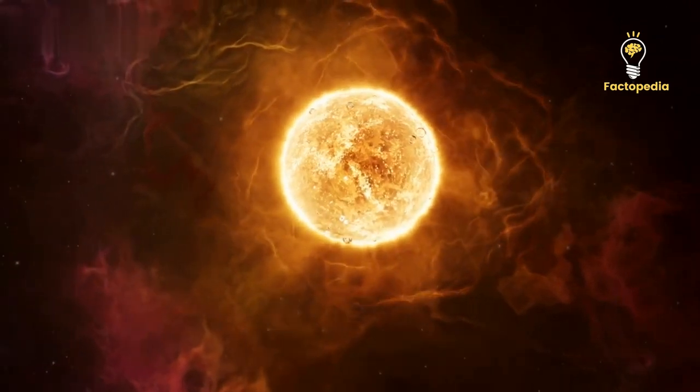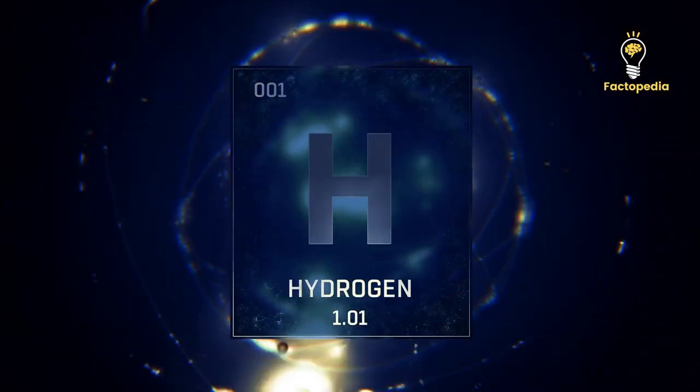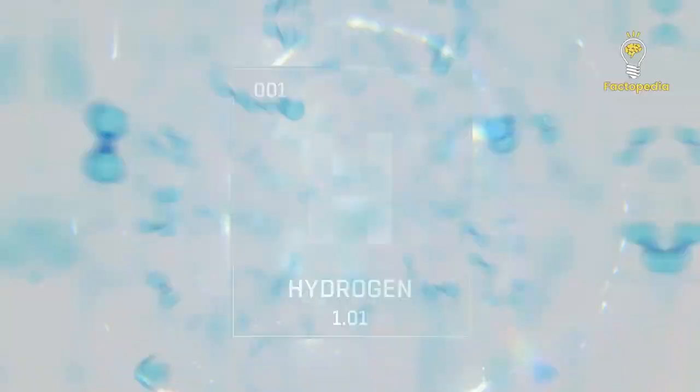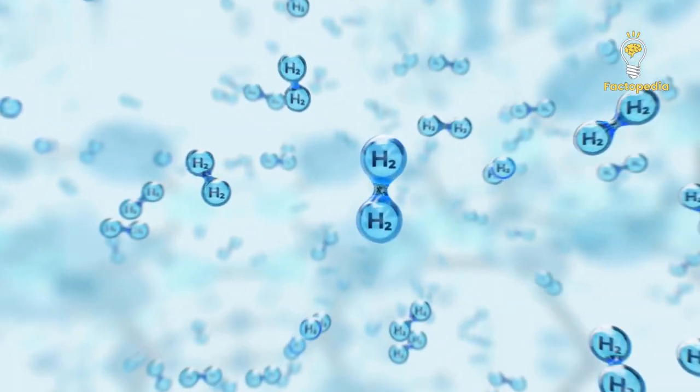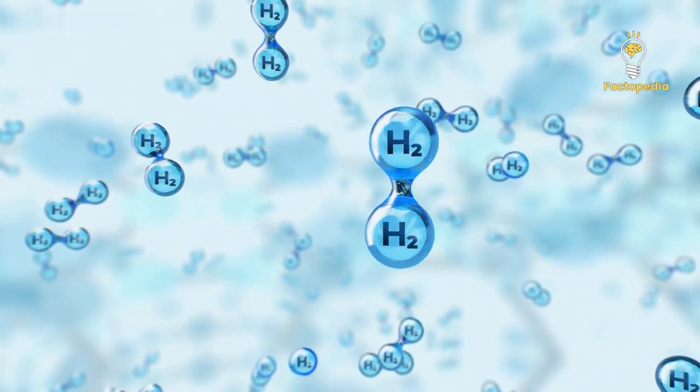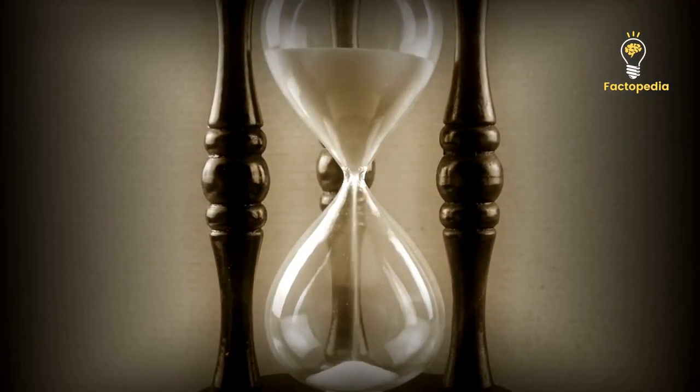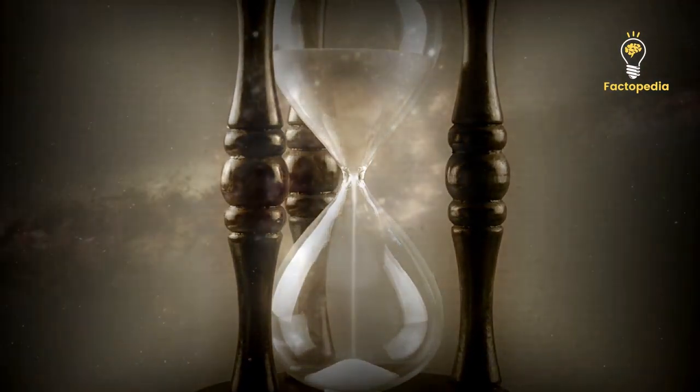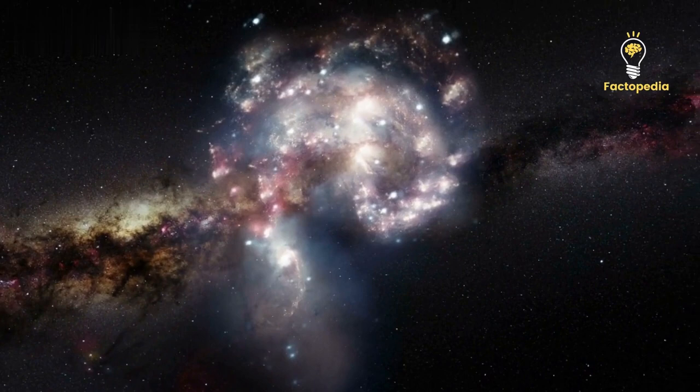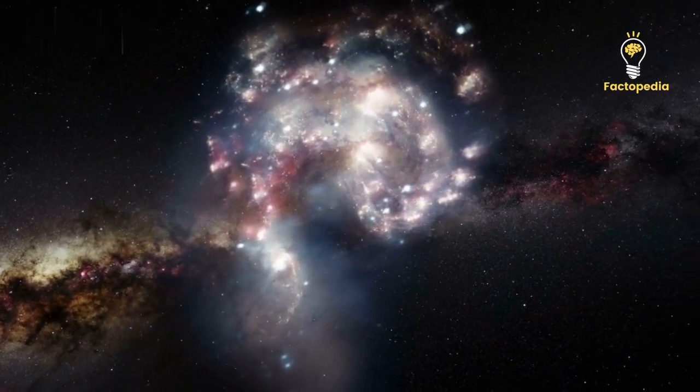In turn, these released various radiations. These processes heated the surrounding hydrogen gas, initiating the reionization of hydrogen and transforming the universe's landscape. Fast forward to about one billion years after the Big Bang, and the universe had evolved into a bustling realm teeming with radiant stars and galaxies.